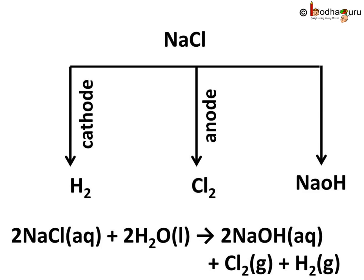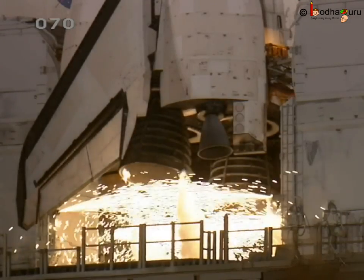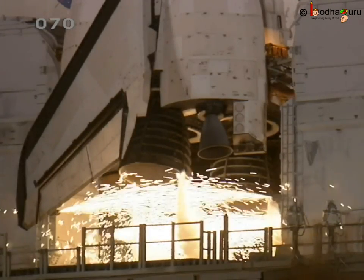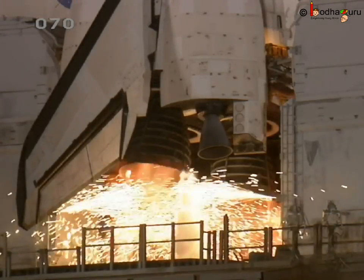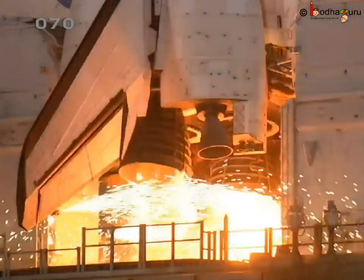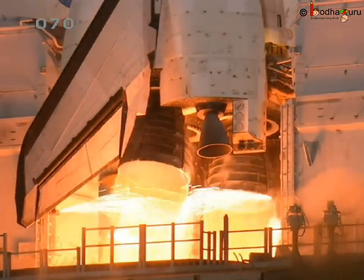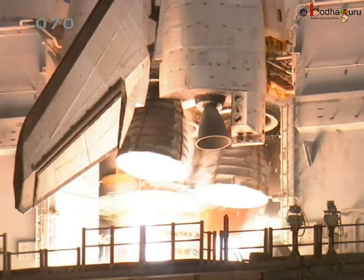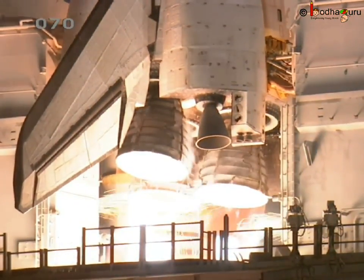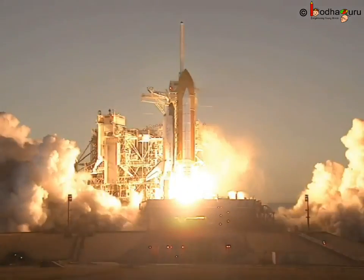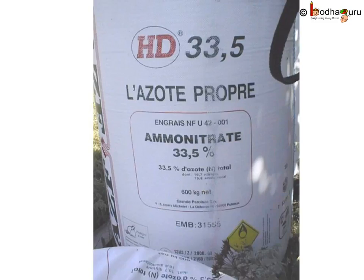Hydrogen gas is also produced in this process. Hydrogen is used as fuel. The margarine we consume is obtained through a reaction between vegetable oil and hydrogen. Hydrogen is also used to produce ammonia, which has many uses such as the production of fertilizers.